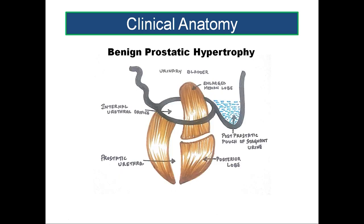Benign prostatic hypertrophy is an age-related condition found in elderly males, and it can be symptomatic or asymptomatic. In BPH it is usually the median lobe which is enlarged. This median lobe forms the uvula vesicae in the floor of the trigone of the urinary bladder, and when enlarged to a maximum extent, a small pouch-like area forms in the bladder behind the median lobe.